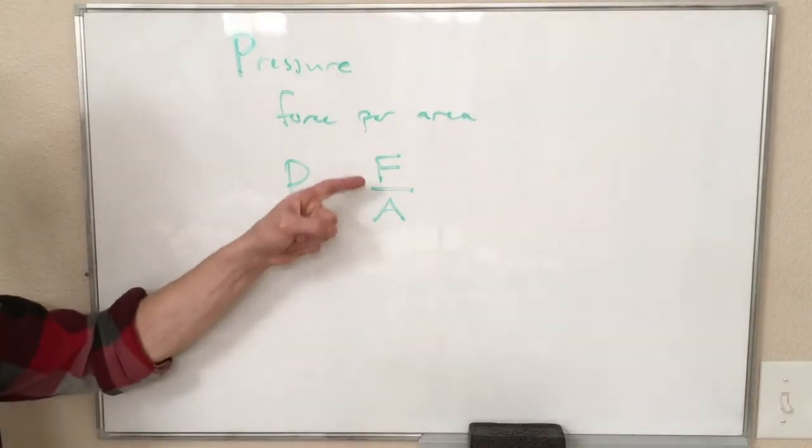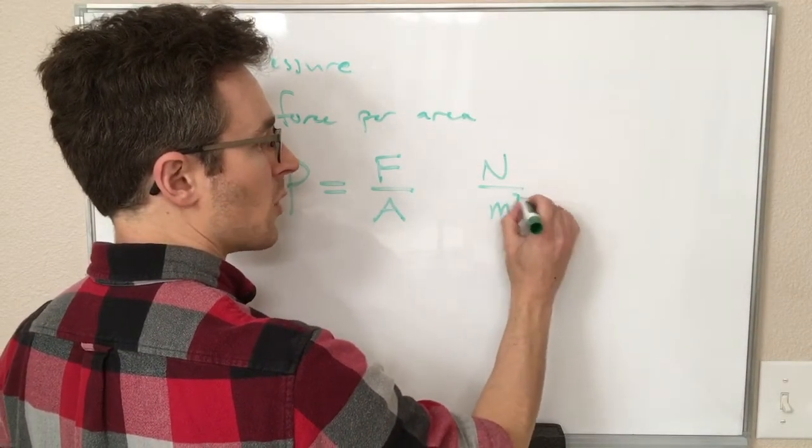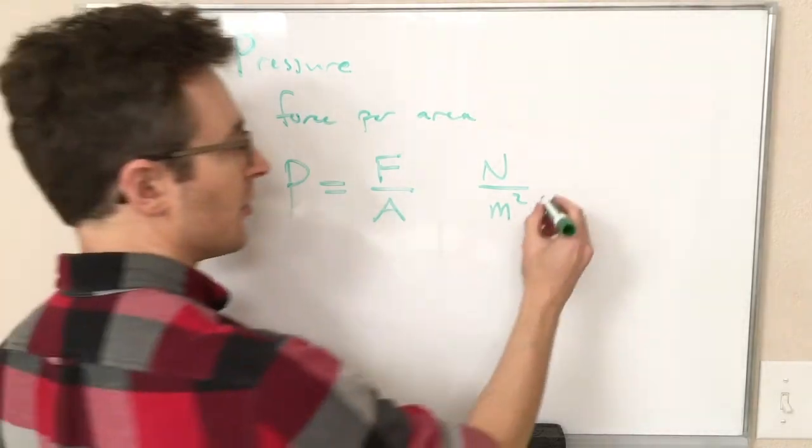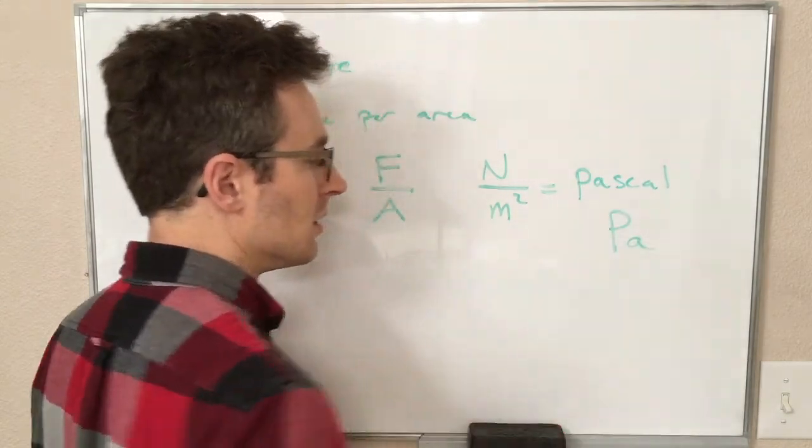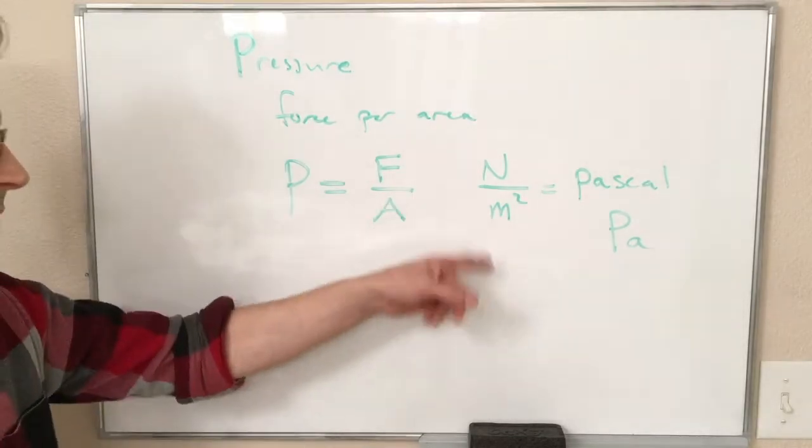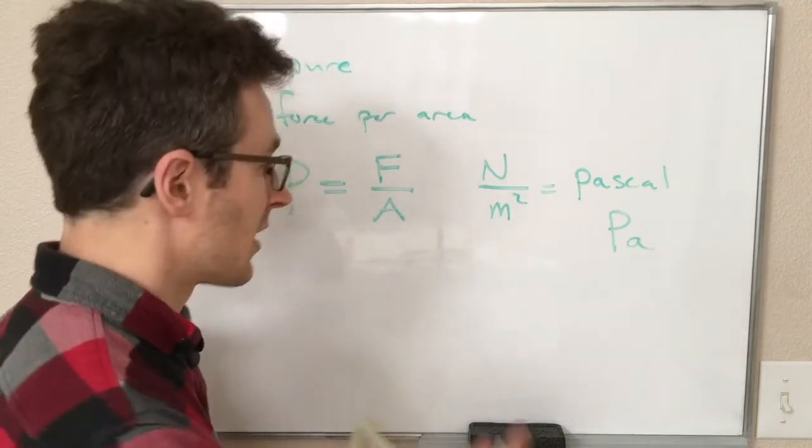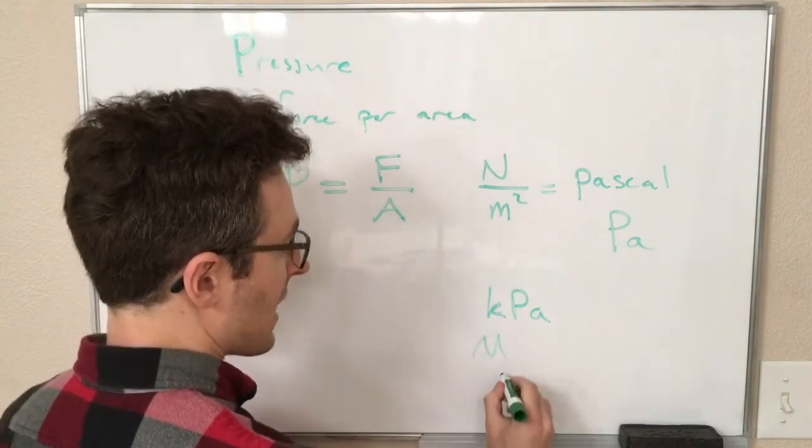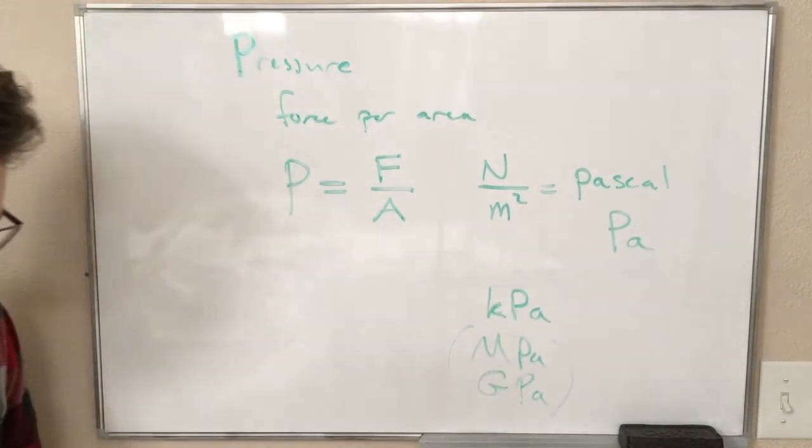In terms of units, our SI units of that are going to be units of force over units of area. So that is newtons per square meter. And one newton per square meter, we give it its own name. This is called the pascal. Abbreviated capital P, lowercase a. So one pascal is one newton per square meter. That turns out to be kind of a small pressure. Numbers in kilopascal are very common. And if you're talking about really high pressures, you can get megapascal or gigapascal also, which I don't know that we'll have need for, but we'll definitely see kilopascals.